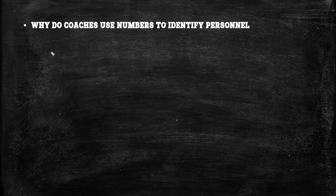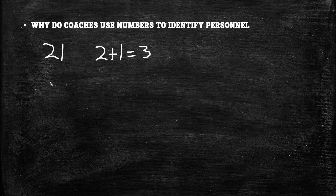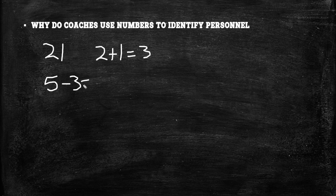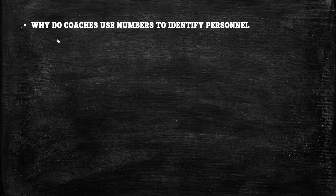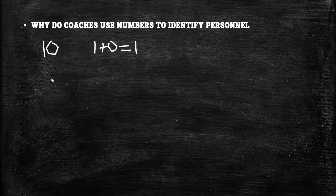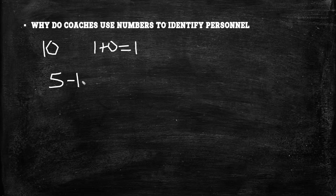For example, with 21 personnel, you take two plus one — two running backs plus one tight end — which equals three. Then you take the five eligible players minus three, which means you're going to have two wide receivers. If you do it with 10 personnel, that is one plus zero, which equals one. Five eligible players minus one means four wide receivers.